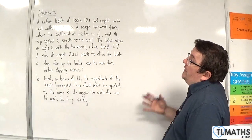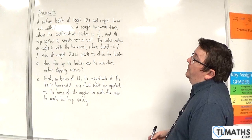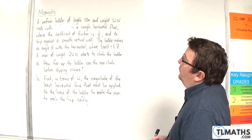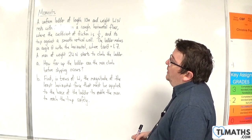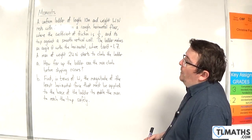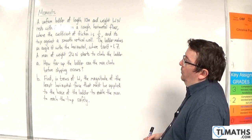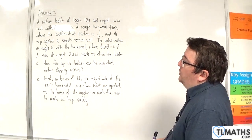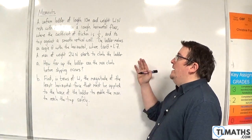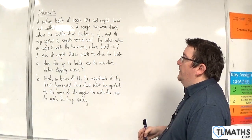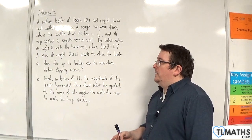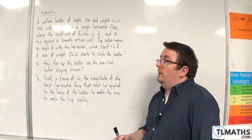In this video, we have a uniform ladder of length 10 metres and weight W Newtons that rests with its base on a rough horizontal floor, where the coefficient of friction is one third, and its top against a smooth vertical wall. The ladder makes an angle theta with the horizontal, where tan of theta is 1.7. A man of weight 2W Newtons starts to climb the ladder. Part A: how far up the ladder can the man climb before slipping occurs?